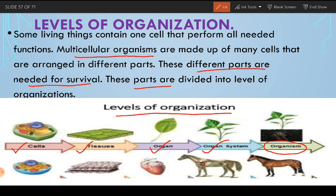These are the levels of organization. The first level is the cell, which we have discussed in detail — what is a cell, what is its structure, its organization. You should be able to answer all these questions about cell composition, structure, organization, and organelles. Now we will move towards the next level, which is the tissue level.